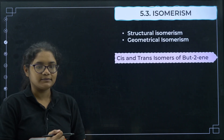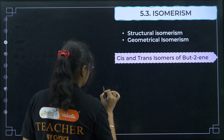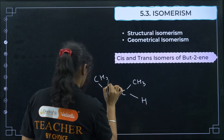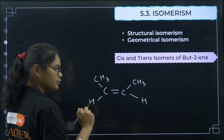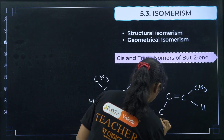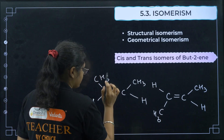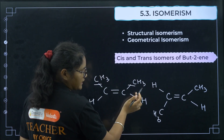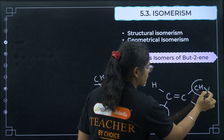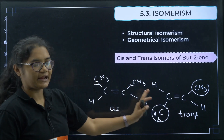Coming to geometrical isomerism — there is cis and trans. In but-2-ene, if the same groups (CH3) are on the same side of the double bond, it is the cis isomer. If the same groups are on opposite sides, it is the trans isomer.